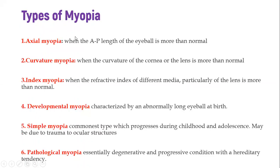There are different types of myopia. Axial myopia results from the anterior-posterior length of the eyeball being more than normal. Curvature myopia occurs when the curvature of the cornea or lens is more than normal, increasing refraction. Index myopia is when the refractive index of the different media, especially the lens, is quite strong. Developmental myopia is characterized by an abnormally long eyeball from birth. Simple myopia is the commonest type, progresses during childhood and adolescence, and can be caused by several reasons including trauma to ocular structures.